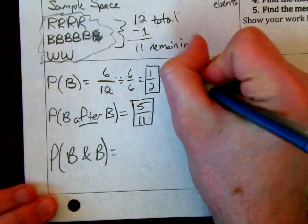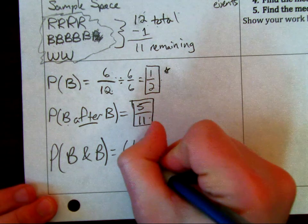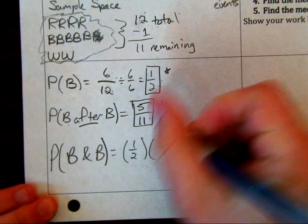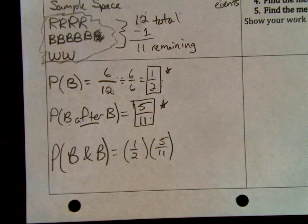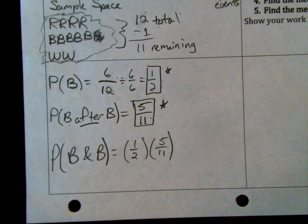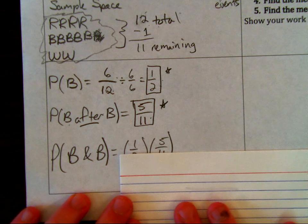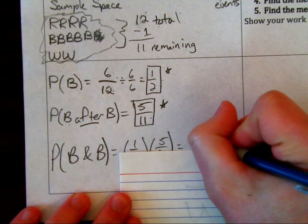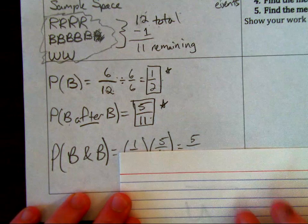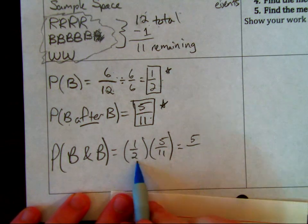Multiply those numerators together: 5 times 1 equals 5. And then I have 2 times 11—multiply those denominators together—will be 22.